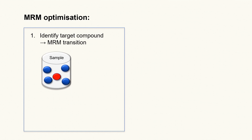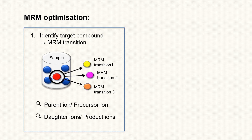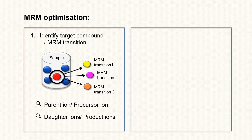Let's check what we need to do to set up an MRM method. First, we have to identify the target compound. With basic information of the target compound, we will be able to identify the parent ion. Subsequently, daughter ions can be selected to form different MRM transitions.